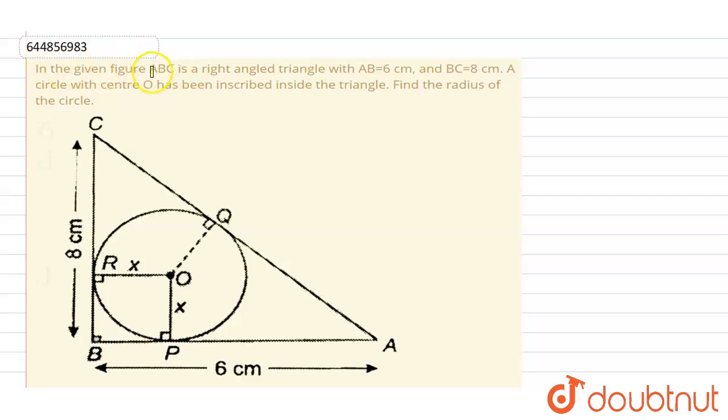In the given figure, ABC is a right angle triangle with AB equal to 6 cm and BC equal to 8 cm. A circle with center O has been inscribed inside the triangle. Find the radius of the circle.